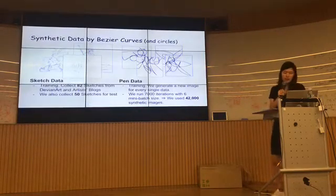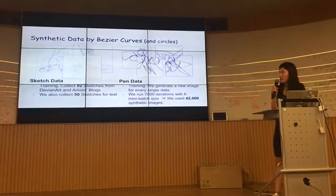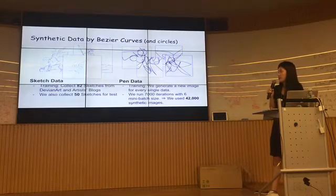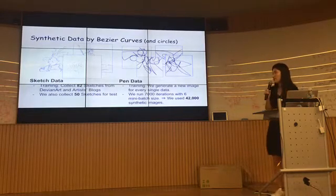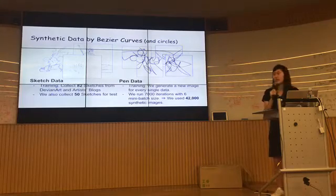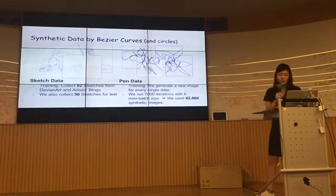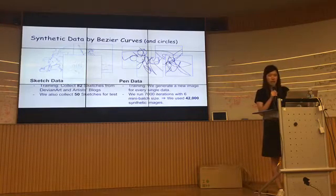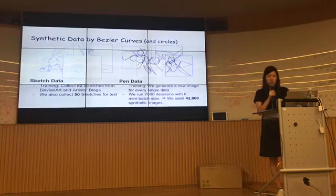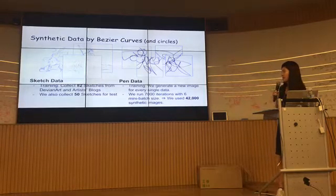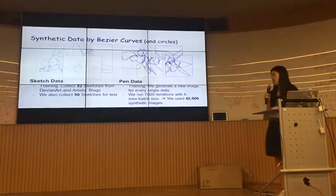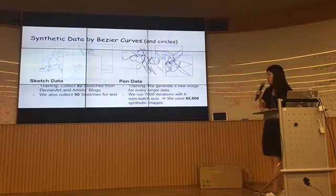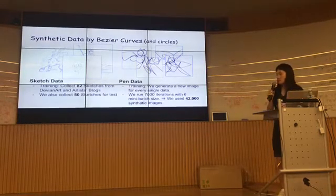For sketch data, I collected 82 sketches from DeviantArt and artists' blogs for training, and 50 sketches for testing — the figures in this presentation are the test sketches. We generate a new synthetic image for every data sample. Since we run 7,000 iterations with a batch size of six, we use around 42,000 new synthetic images.